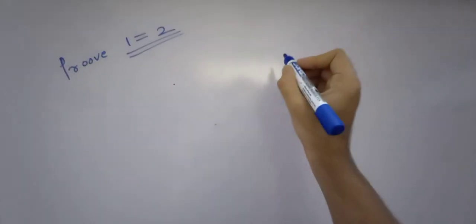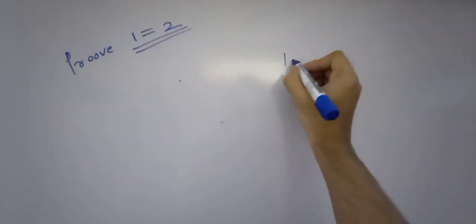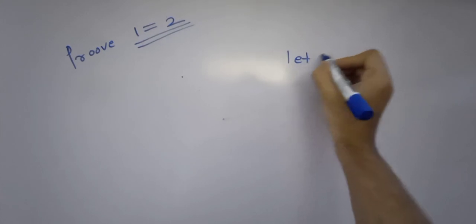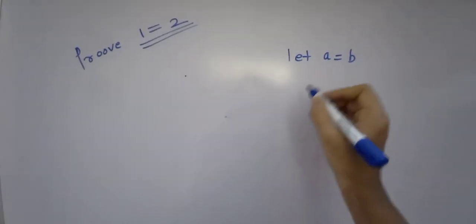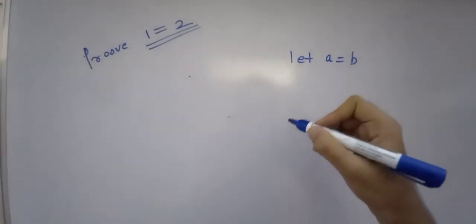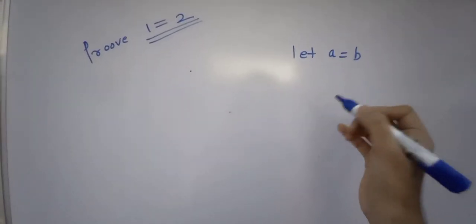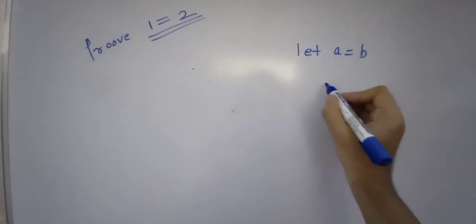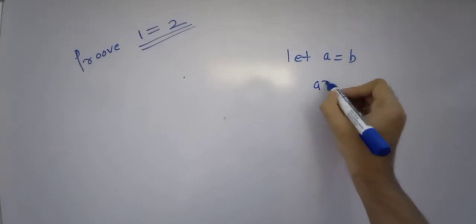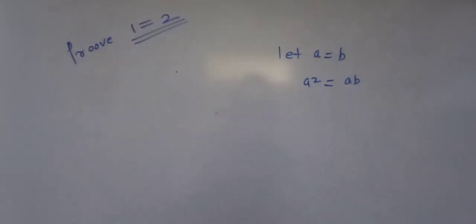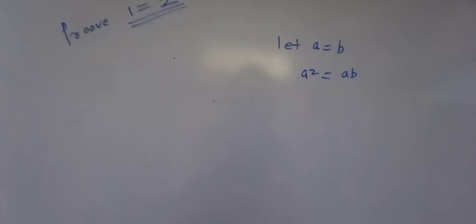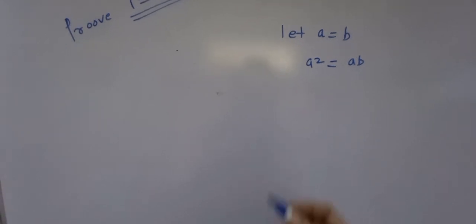We have to prove 1 equals 2. So let's suppose a equals b. Now multiply both sides by a, so it's a squared equals ab. Now subtract b squared from both sides.